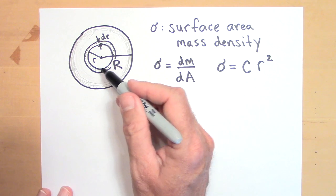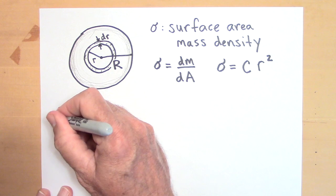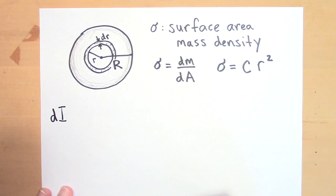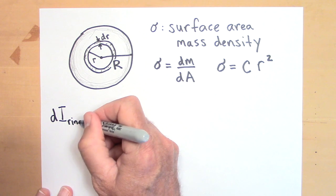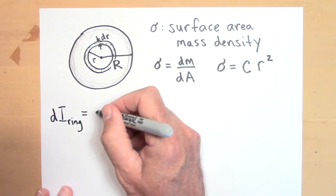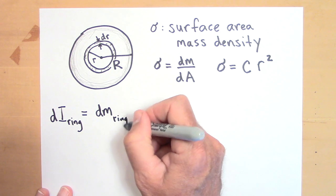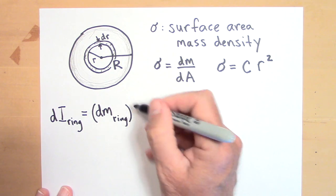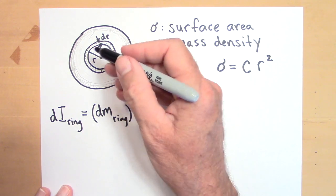But the I of the ring, I'm going to put dI because it's a really tiny rotational inertia. So the dI of the ring, just the ring, is going to be whatever the mass of the ring is, the dm of the ring. It's going to be that times how far it is from the axis.